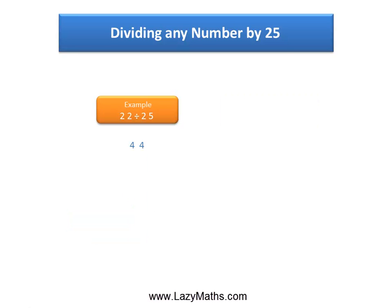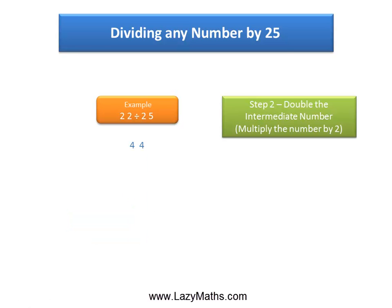The next step is to take the intermediate number 1, 44, and double it one more time, or multiply it by 2, and we get 88. So the intermediate number 2 is 88.